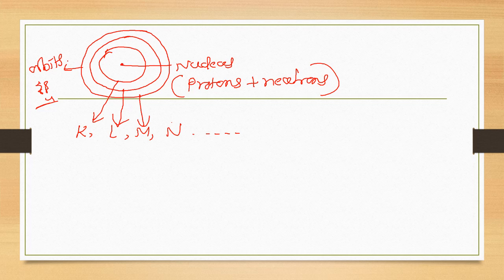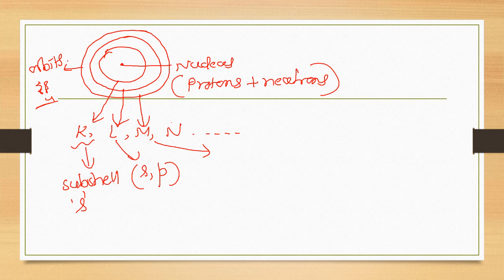Inside each shell, sub-shells are present. In K shell, there is one sub-shell: S. In L shell there are two sub-shells: S and P. In the third shell M there are three sub-shells: S, P, D. In the fourth shell N there are four sub-shells: S, P, D and F.